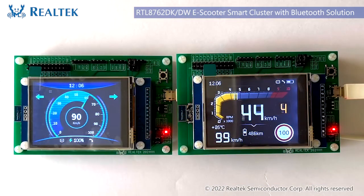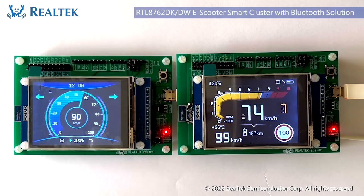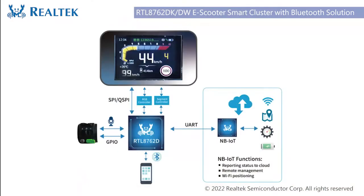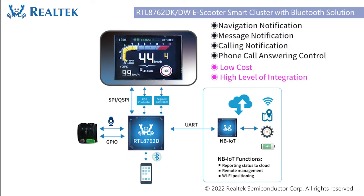Hello everyone. I am going to introduce the eScooter Smart Cluster with Bluetooth solution. This solution uses a RTL8762DK as main control to realize the functions of screen display, message notification, online navigation, and phone call answering control. The biggest advantage of this solution is low cost and high level of integration.